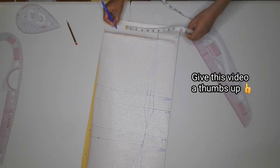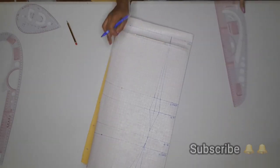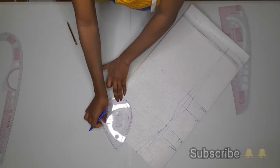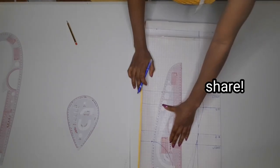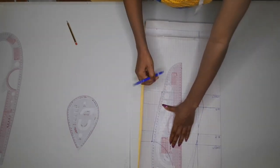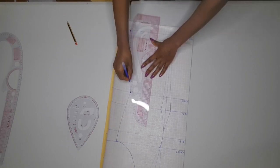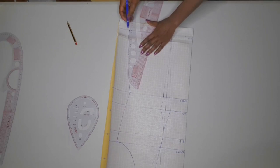Once that is done, you just need to connect the points together. I'm connecting the armhole and I'm also going to connect the shape using my curved ruler. If you are not yet subscribed, please go down below and click the red button to subscribe and also give this video a thumbs up.